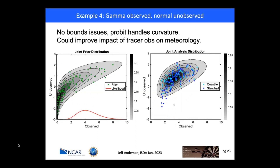A final example: the observed variable is gamma, like the earlier example, and the unobserved variable is normal. This might be a case where you have a measurement of a tracer and want to see its impacts on a normally distributed meteorological variable. There's definite improvement: the standard regression in dark blue leaves members trailing outside the posterior distribution, while the cyan does not.